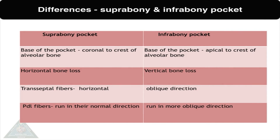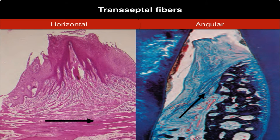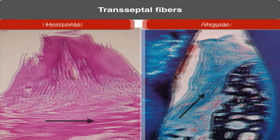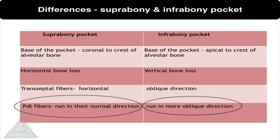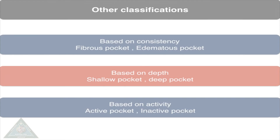Transeptal fibers run horizontally in the case of a suprabony pocket, whereas they run obliquely in the case of an infrabony pocket. PDL fibers run in the normal direction in a suprabony pocket, whereas they run in a more oblique direction in the case of an infrabony pocket.